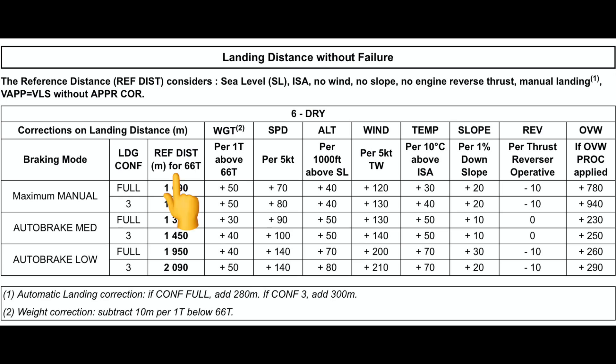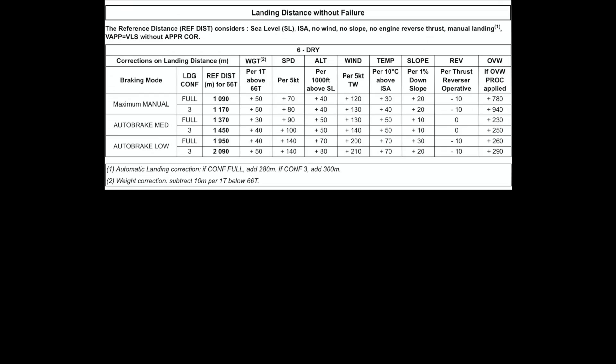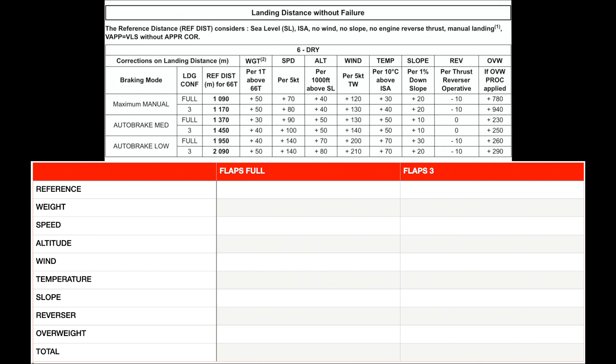The reference distance for auto brakes medium and configuration full is 1,370 meters. Now let's apply all the corrections to see how much distance is required if we land with flaps full and auto brakes medium. Weight correction will be zero because we are assuming we're landing at our maximum landing weight of 66 tons.